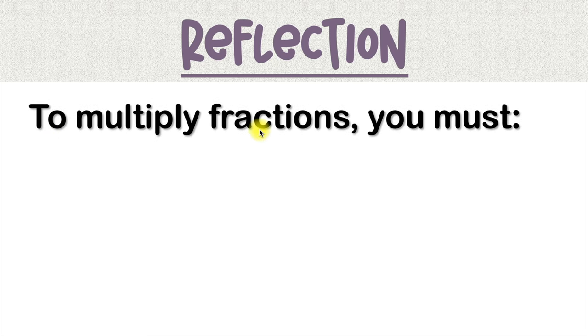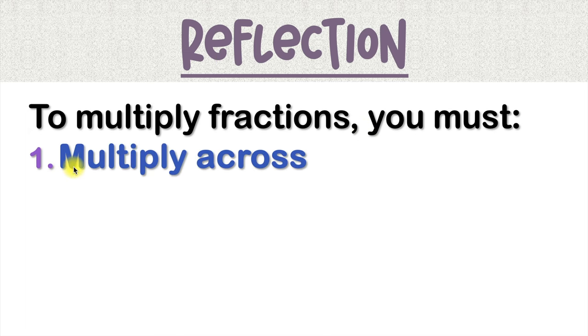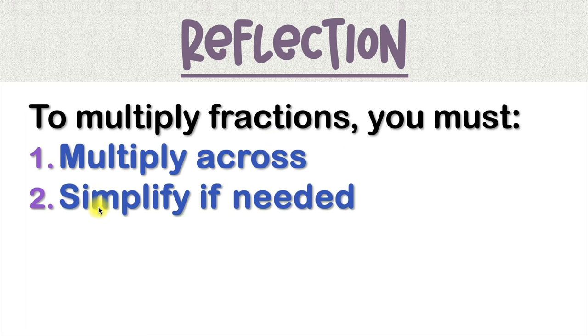So what did we learn from this lesson? To multiply fractions, you must: Number 1, multiply straight across. That means you multiply the numerators, write your fraction line under that answer, and then multiply your denominators. And step 2 is to simplify if needed. This will only happen if both your numerator and denominator have some number that can divide both of them.